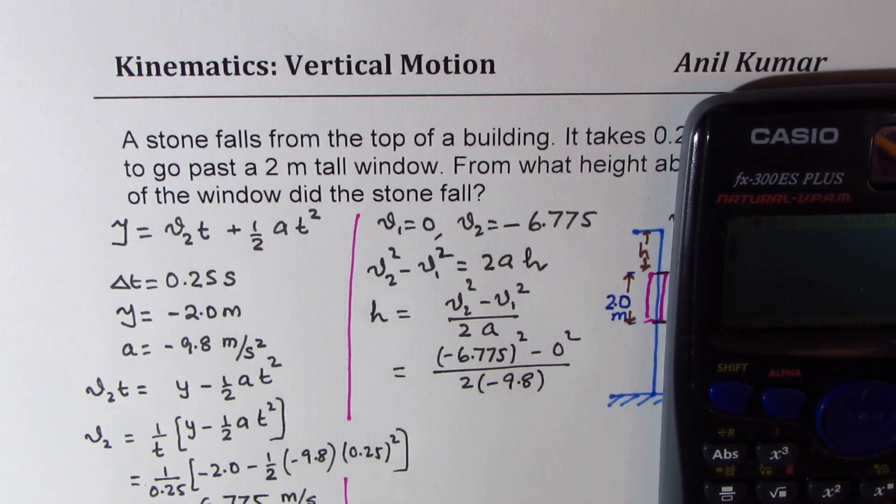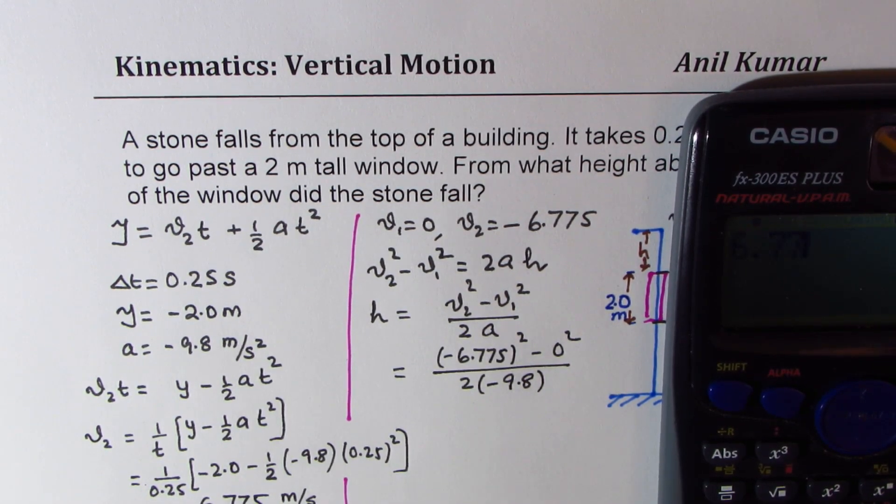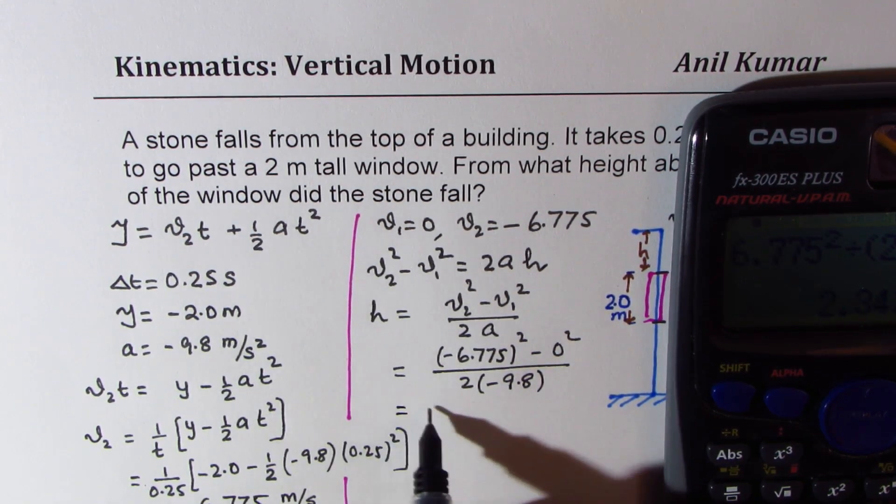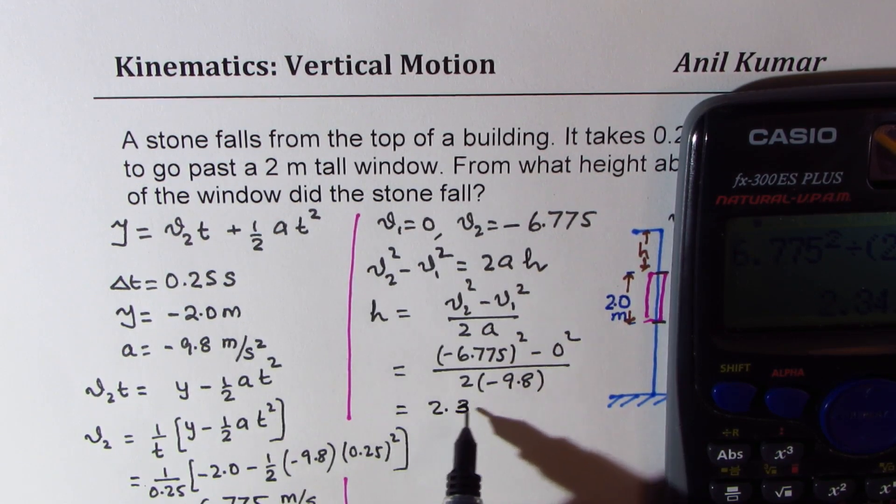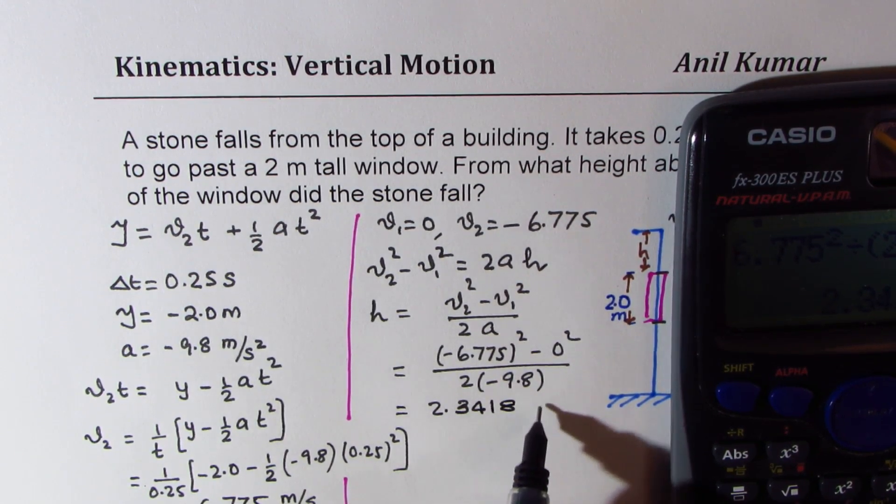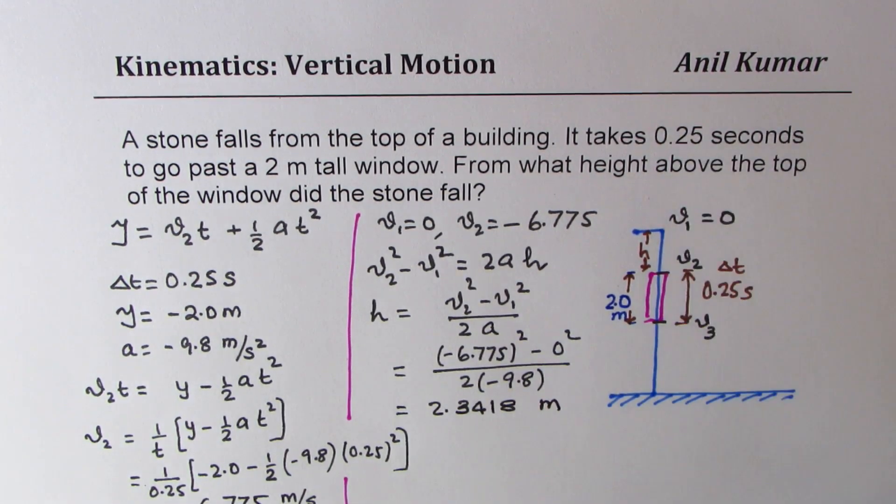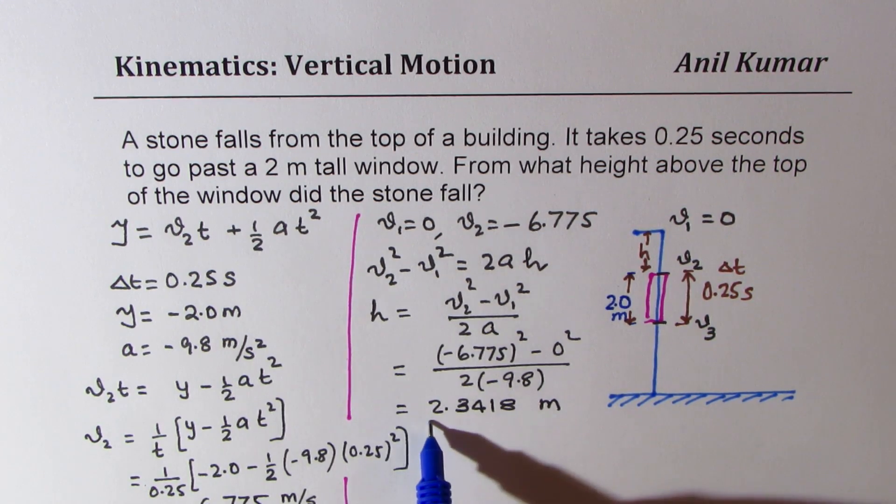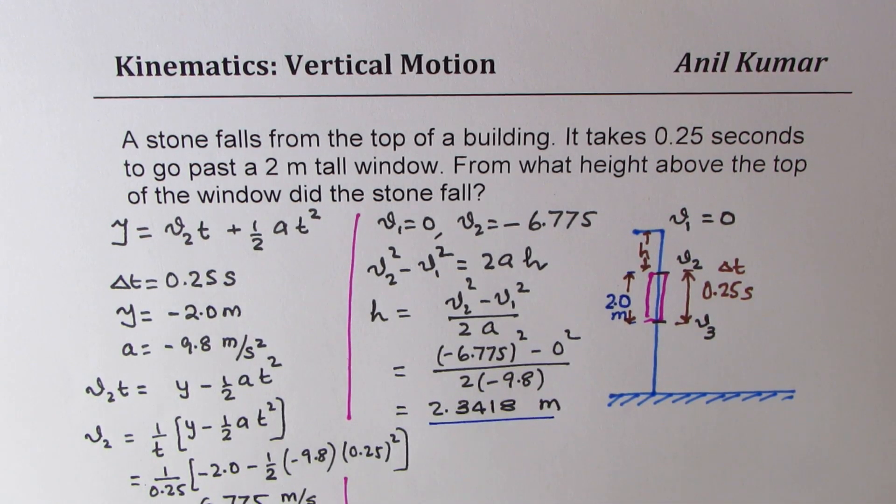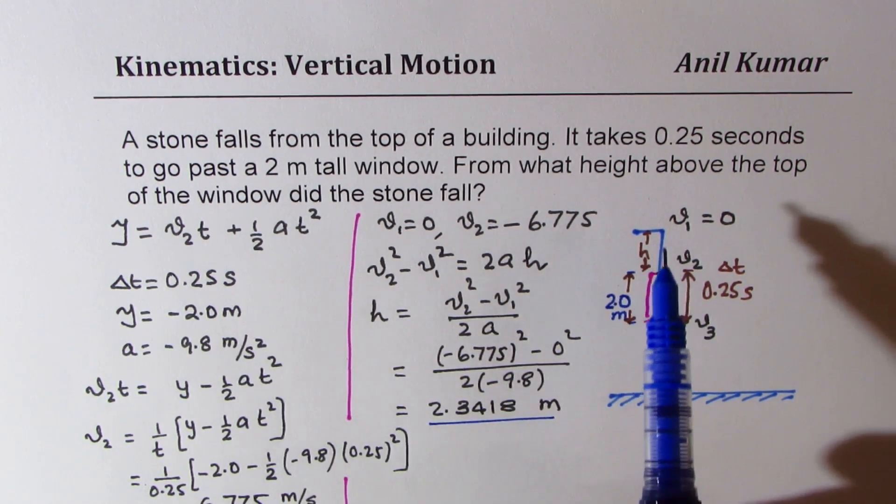v2 is minus 6.775, whole squared, minus 0 squared, over 2 times minus 9.8. So 6.775 squared divided by 2 times 9.8 equals 2.3418 meters.